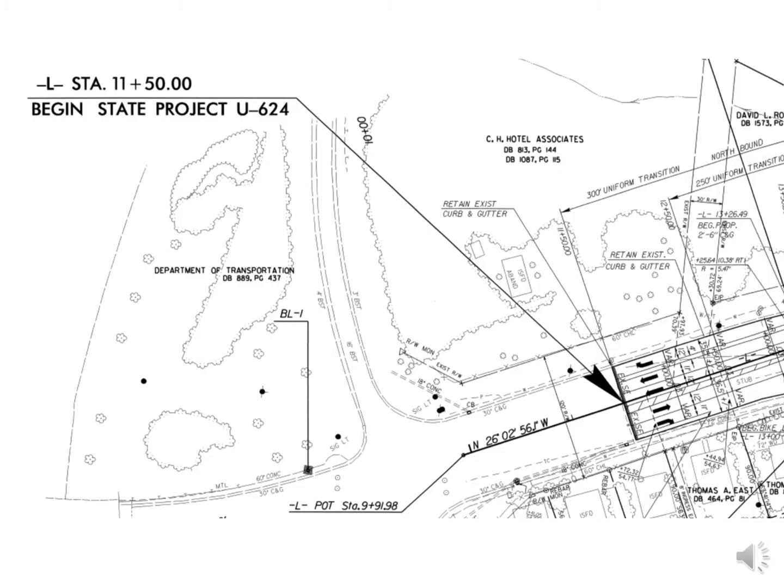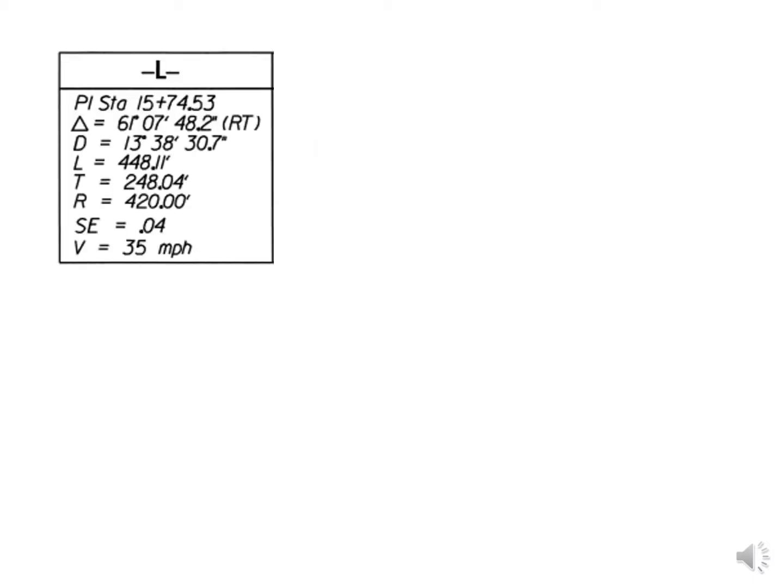We'll start at the beginning of the project at station 11 plus 50. A key piece of information here is the first bearing. The first tangent has a bearing of North 26 degrees 2 minutes 56.1 seconds West.